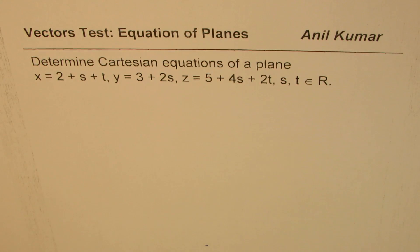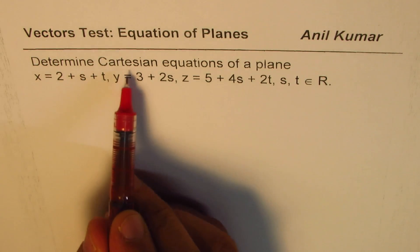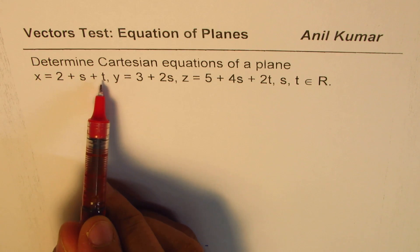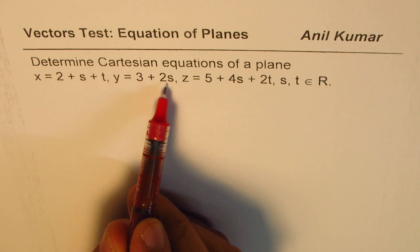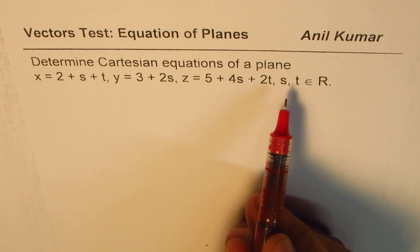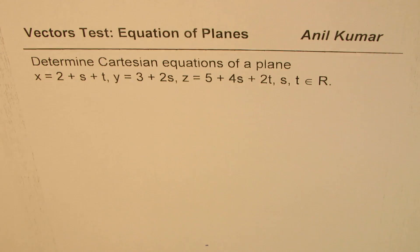The question is: determine the Cartesian equation of a plane where x = 2 + s + t, y = 3 + 2s, z = 5 + 4s + 2t, where s and t belong to the set of real numbers.